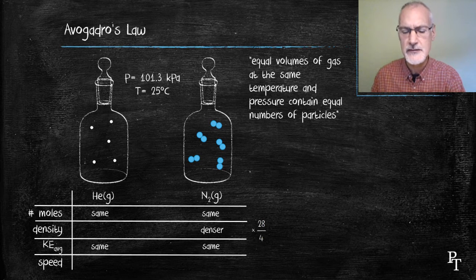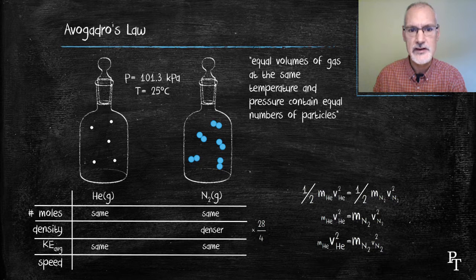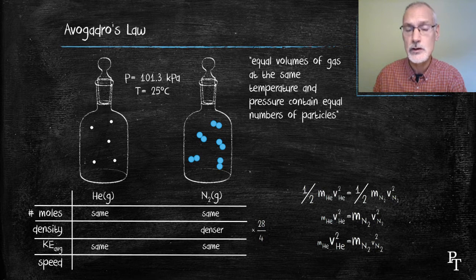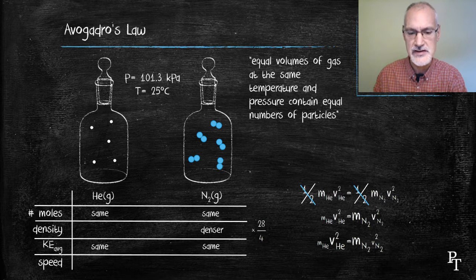Now what about the speeds of the particles? Here I have the expression for kinetic energy. It's 1 half mv squared and at the same temperature these two quantities must equal each other. First I'll cut off the halves here, cancel them to make it a little easier to see.